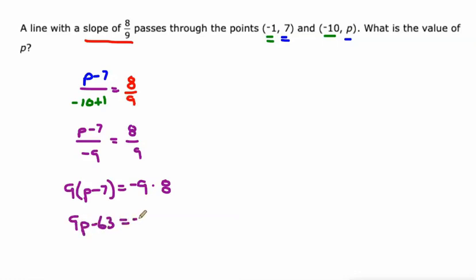Equals negative 72. And then, I'll add 63 to both sides. Negative 72 plus 63 is negative 9. And then, I'll divide both sides by 9. And I get that P is negative 1. Let's do one more.